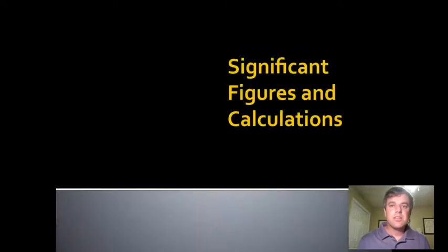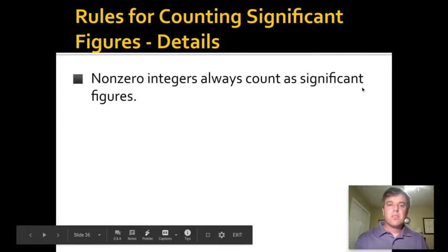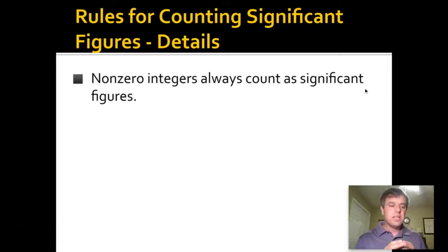Now for the meat of the lesson: significant figures and calculations. If you're looking at a measurement that has been recorded somewhere, we need to know which digits in that measurement actually count. The issue is always going to be with zeros. If there's a number and there's no zeros in it, then all of the digits in that number are significant. So the number 3,456 has four significant figures.